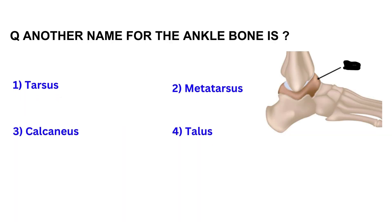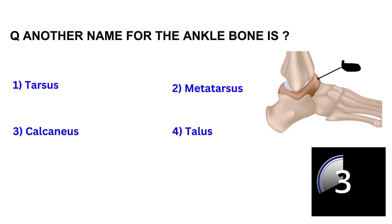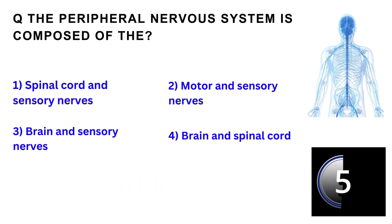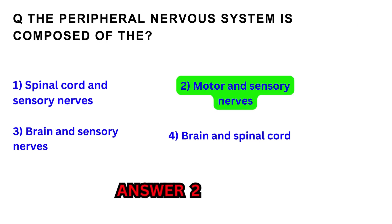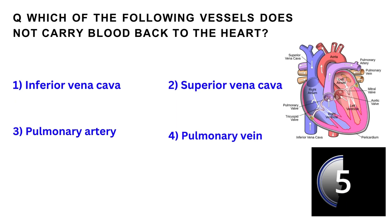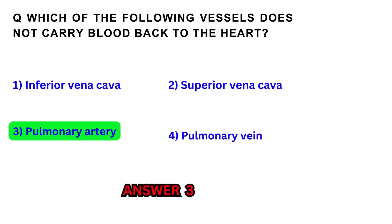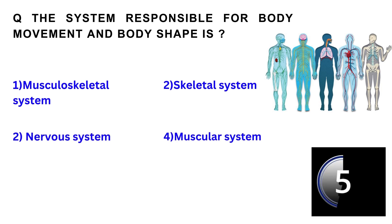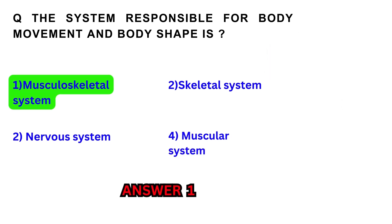Another name for the ankle bone is? Talus. The peripheral nervous system is composed of the? What is responsible for body movement and body shape? Musculoskeletal system.